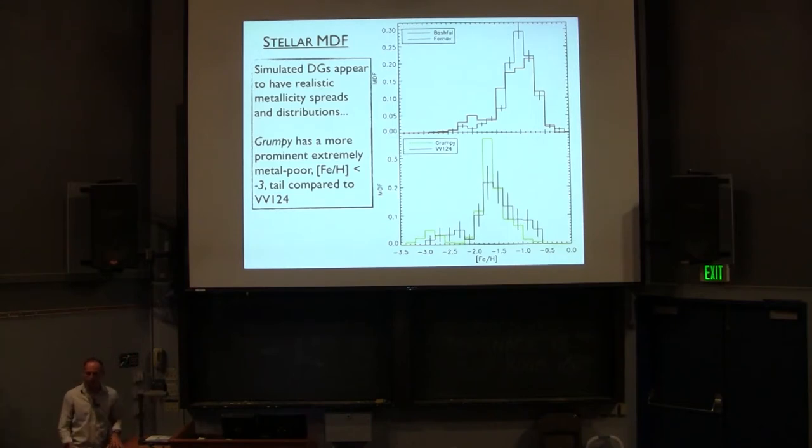These are stellar metallicity distribution function. The color is the simulation. These are two of our dwarfs, Bashful and Grumpy. The black points are the data for two dwarf systems which happen to have the same average metallicity. I don't want to make a lot of these comparisons, just to show that the distribution of metallicities that we find is not too different than what observers find actually. Okay? So there seems to be a decent distribution of metallicities, and of course, this is giving information about the entire star formation and chemical evolution history of those systems as opposed just to the mean metallicity.